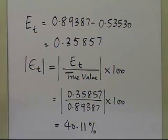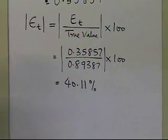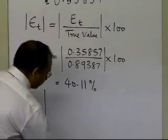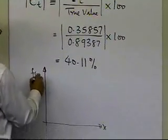So you have a huge amount of relative true error, which is part of this trapezoidal rule, turns out to be 40.11%, because if you look at the value, if you draw the function which you are integrating here, let's go ahead and do that.